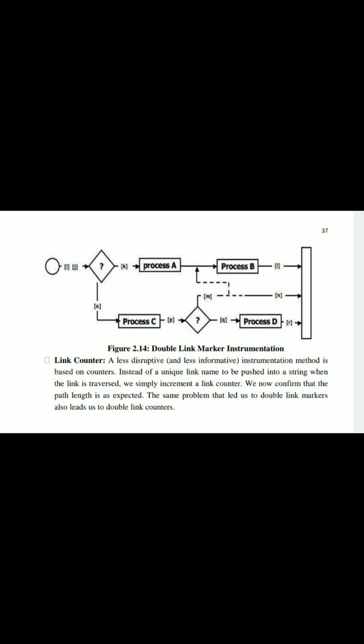The Link Counter method is a descriptive instrumentation method based on counters. It counts how many links have been traversed along the path. For example, with five processes and five links: first process executes — counter equals 1; second process — counter increments to 2; third — 3; fourth — 4. So if count equals 4, the path was correctly followed. Instead of pushing a unique link name into a string, we simply increment the link counter each time a link is traversed.